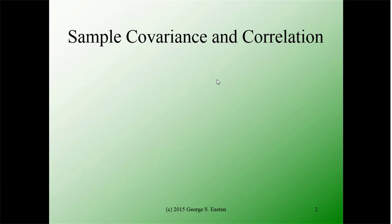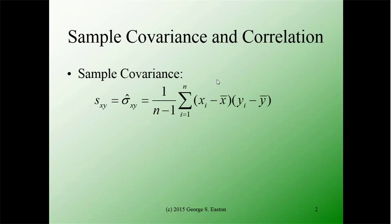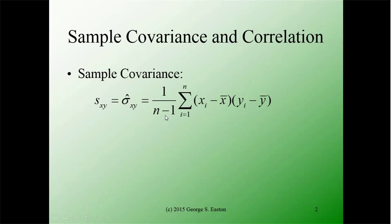To compute the sample covariance between two variables, take each x value and subtract the mean x-bar, then do the same for y — subtract y-bar — multiply those two differences together, and sum them from 1 to n. Finally divide by n minus 1. The sample covariance is denoted s sub xy or sigma-hat sub xy.